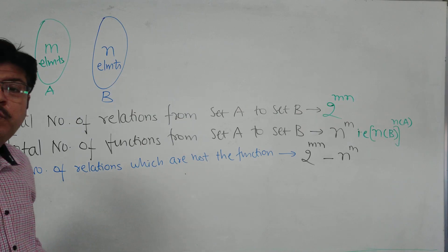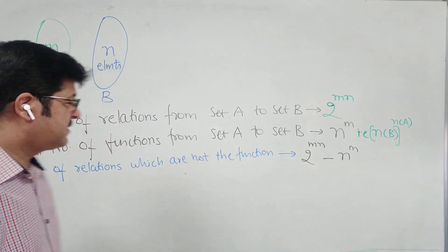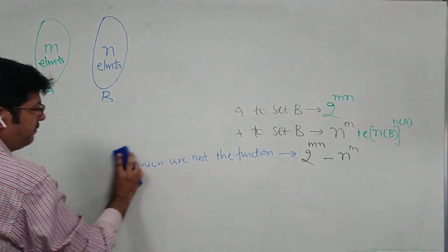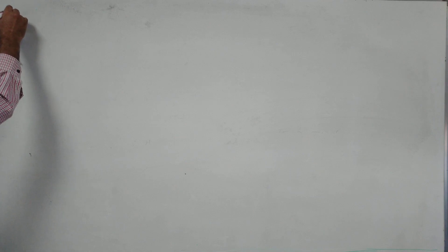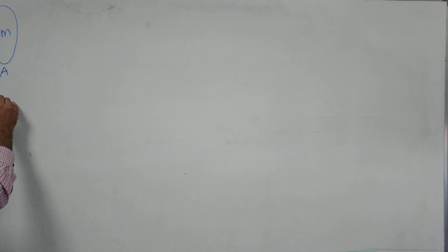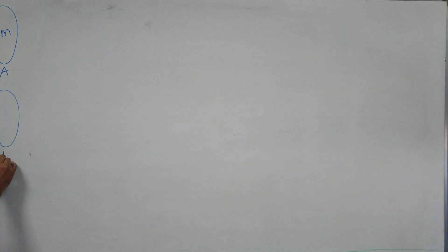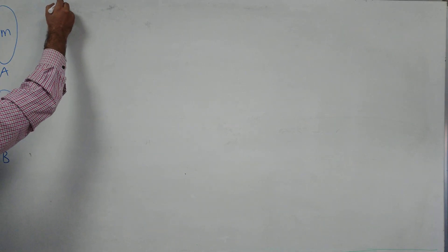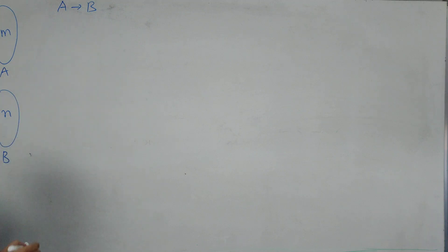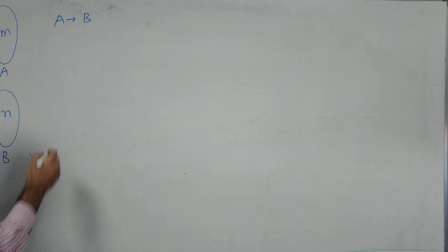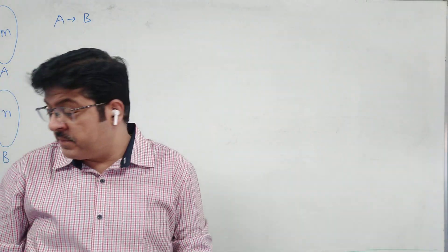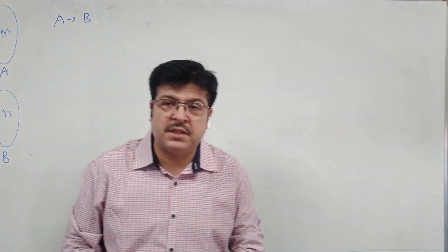Next we look at one-one functions, onto functions, and more. We begin again with set A having M elements and set B having N elements, discussing functions from A to B. I am starting with the table straight away — you need to memorize this table.